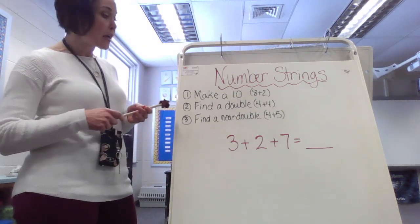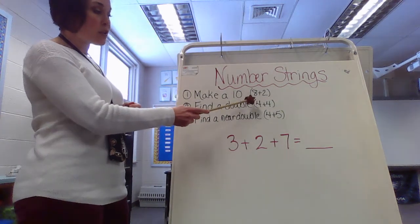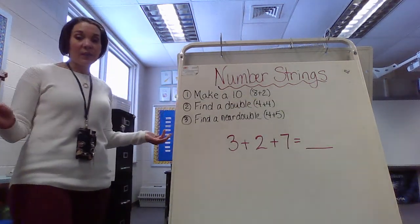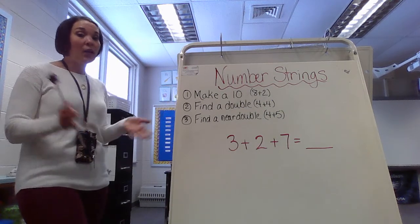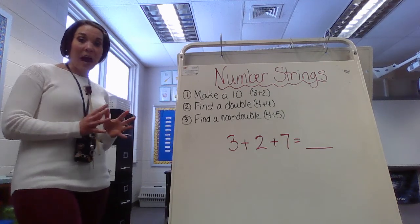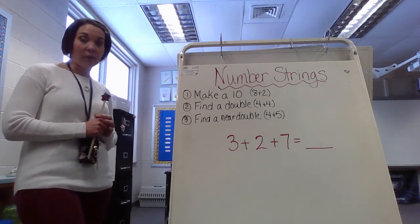Let's take a look at the second one: find a double. Here's an example, 4 plus 4. So here in this case I have a 3, a 2, and a 7. I do not see a double available. Remember, doubles are two numbers that are exactly the same that you are adding together.